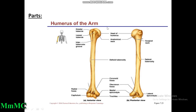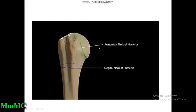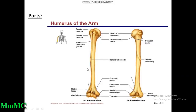The features of the upper end include: head, neck, greater tubercle, lesser tubercle, and inter-tubercular sulcus or bicipital groove. The neck is divided into two parts — the anatomical neck and the surgical neck. The shaft presents three surfaces: anteromedial surface, anterolateral surface, and posterior surface.